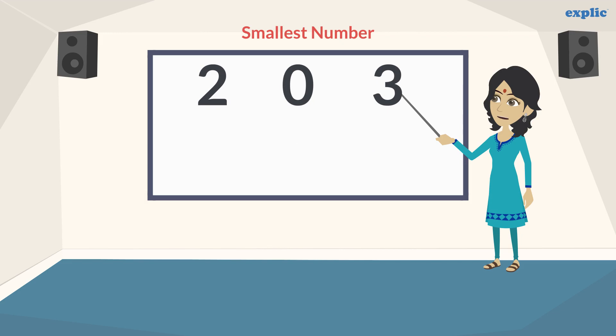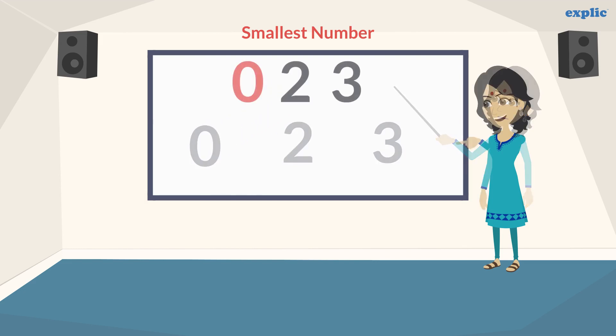To form the smallest number, we arrange digits in ascending order. However, zero at the beginning of the number does not change its value.